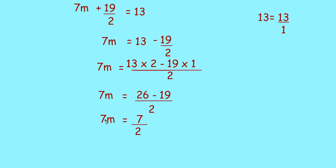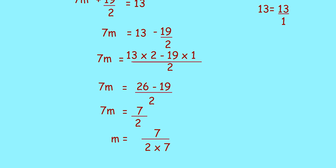Now, you have to transpose 7. It is 7 into m equals 7. So, while transposing, it will be divided. But, already here 1 divided by 2 is there. So, you can write m is equal to 7 by 2 into 7.